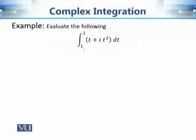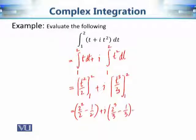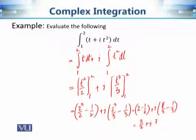Consider the integral of the complex valued function t + i·t² from 1 to 2. According to our definition, we evaluate the real and imaginary parts separately: integral of t from 1 to 2, plus i times integral of t² from 1 to 2. Using the fundamental theorem of calculus, integral of t gives t²/2, and integral of t² gives t³/3. Evaluating: (4/2 − 1/2) + i(8/3 − 1/3) = 3/2 + i·7/3. That's our answer.